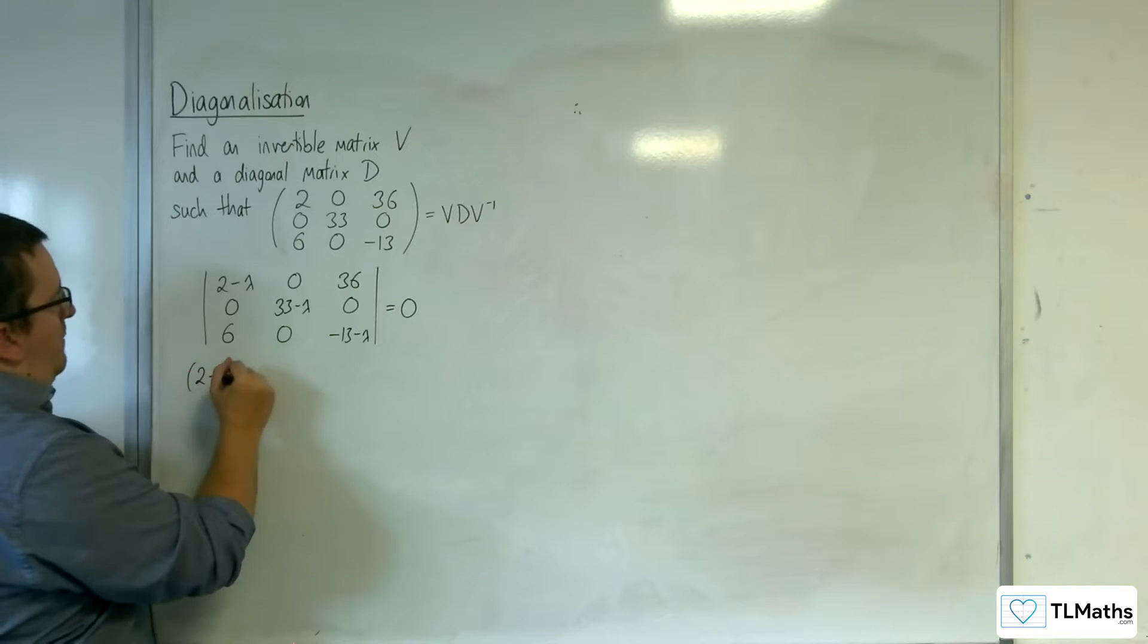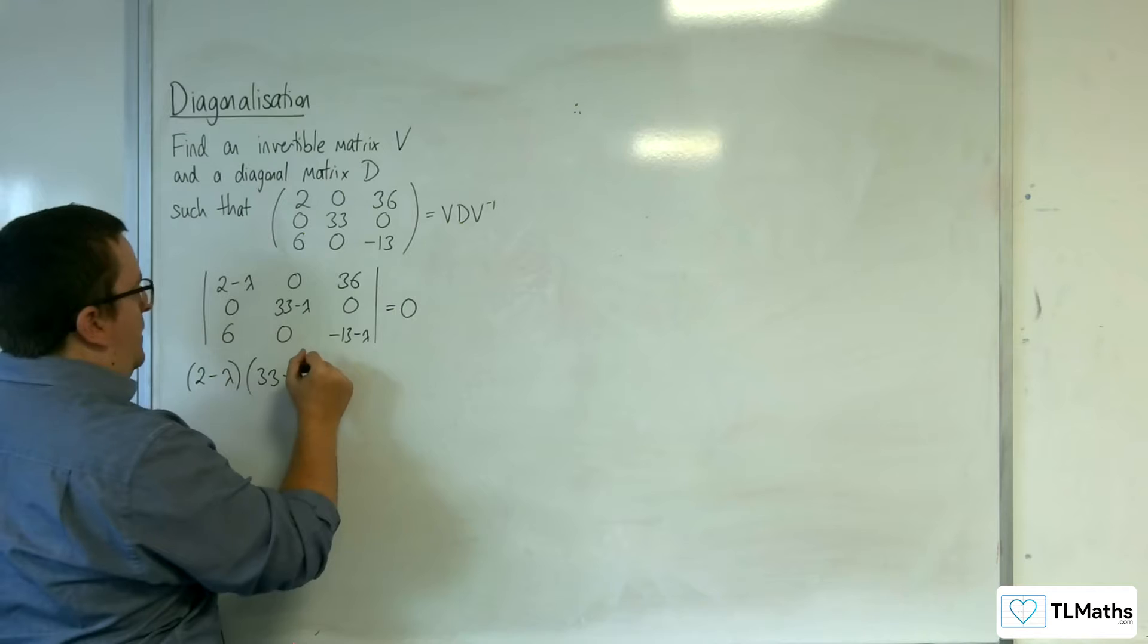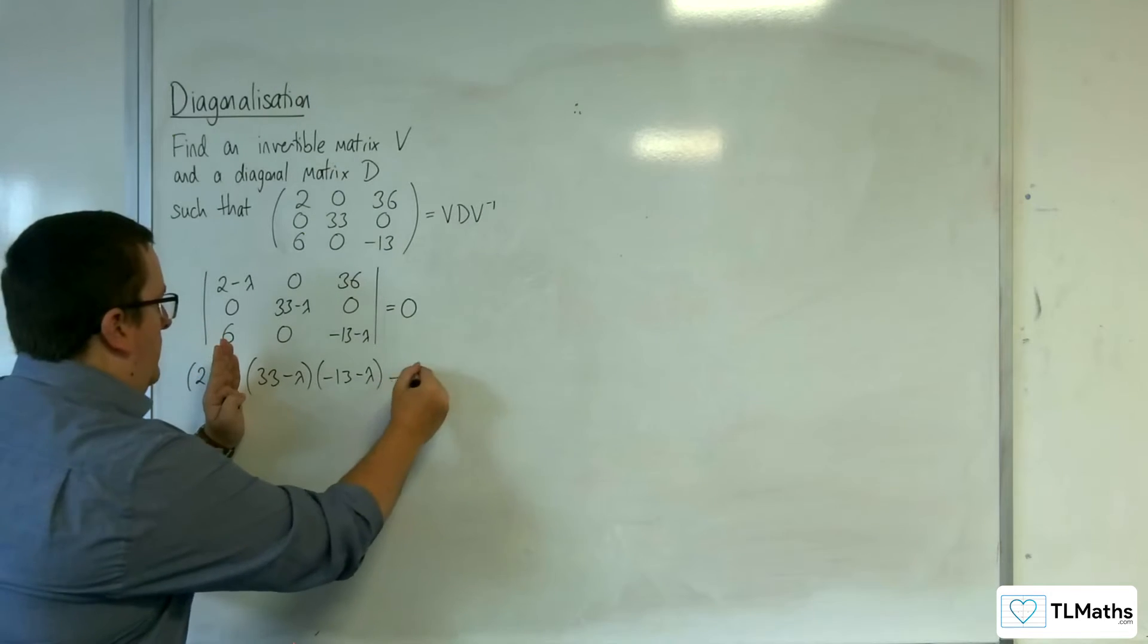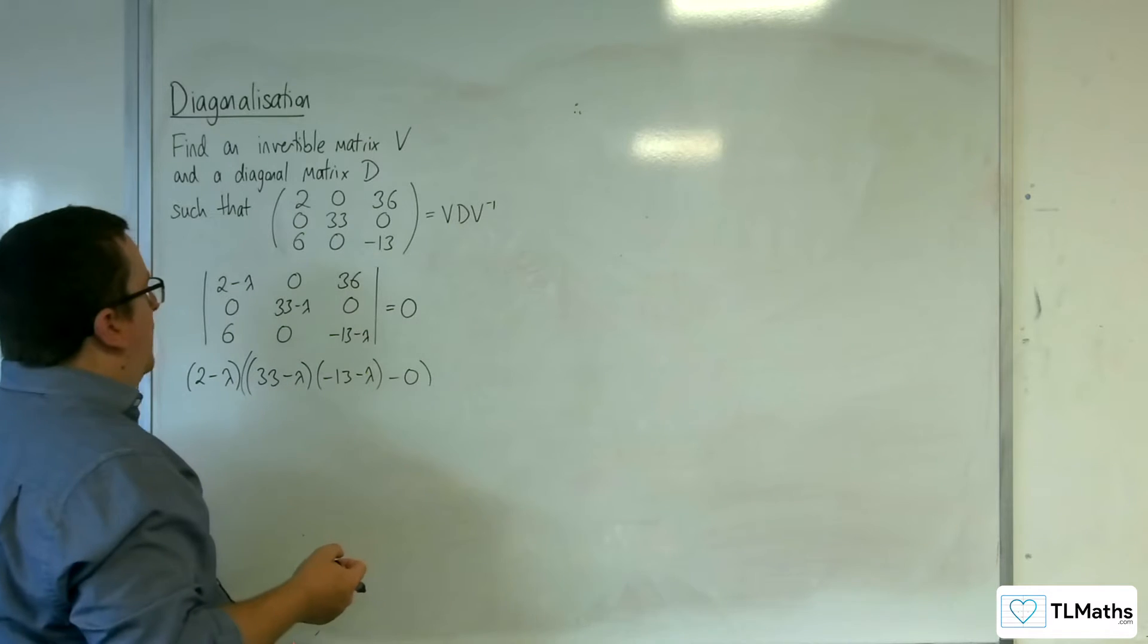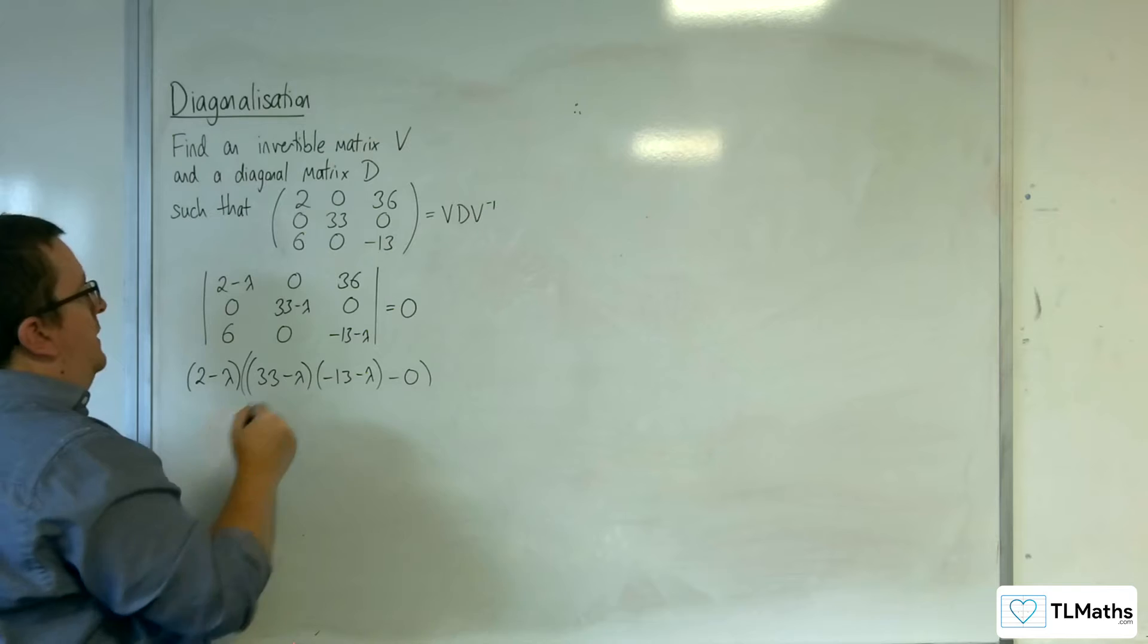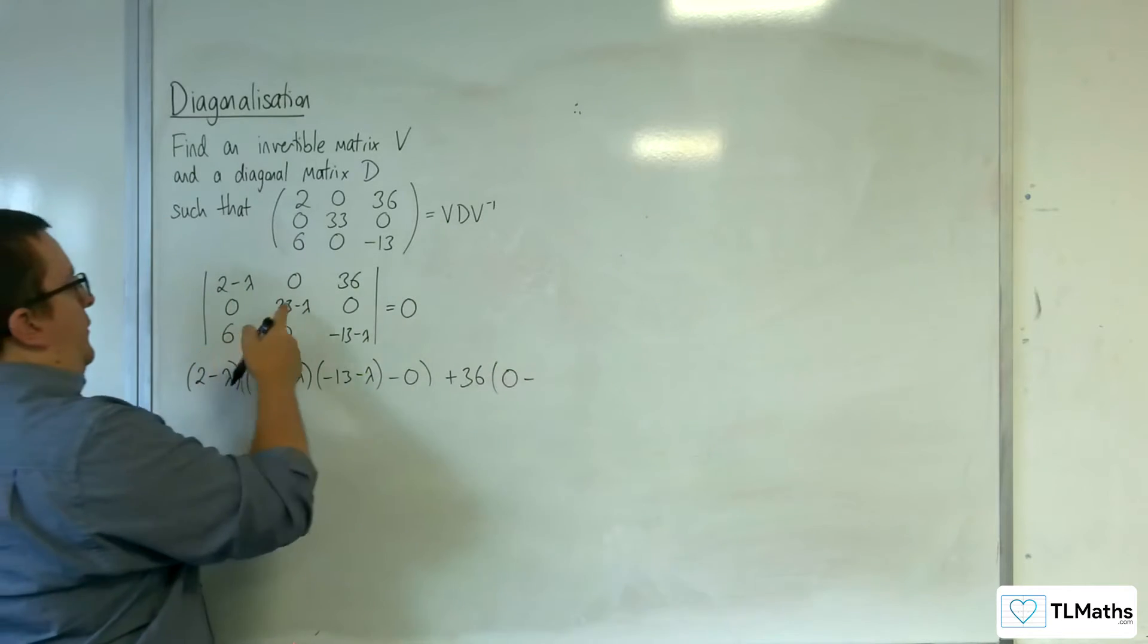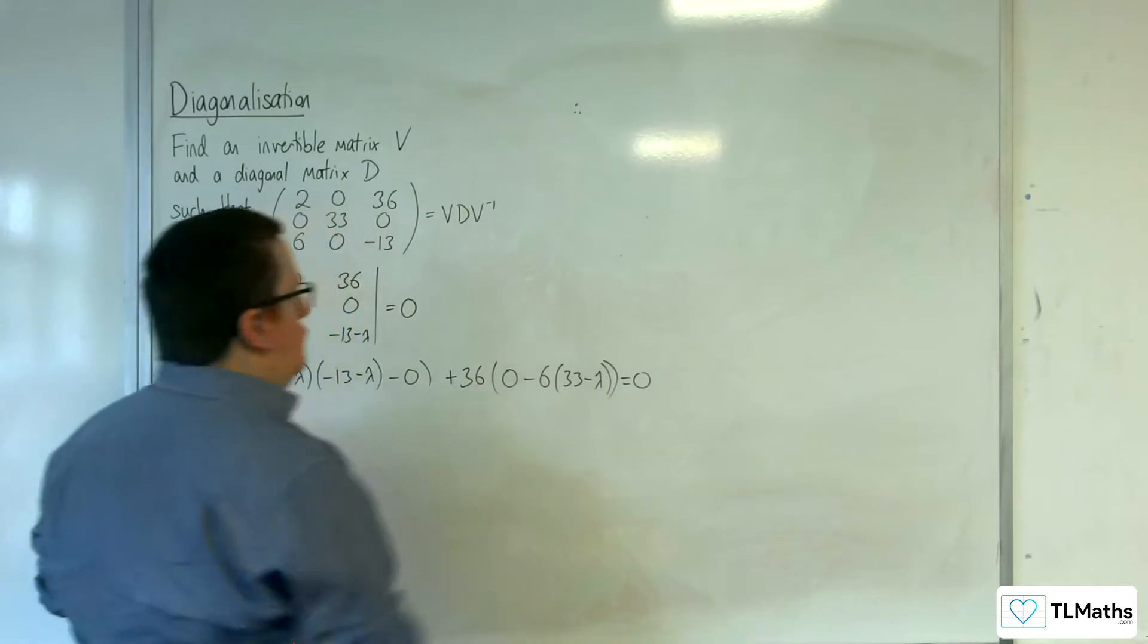So 2 take away lambda, times by 33 take away lambda, times minus 13 take away lambda, take away 0, then take away 0, well that's not going to give you anything, then plus 36 lots of, then we've got 0, take away 6 lots of 33 take away lambda. And that's going to be equal to 0.